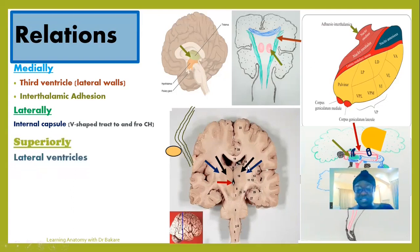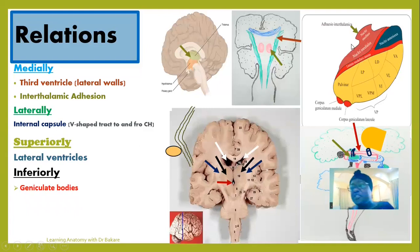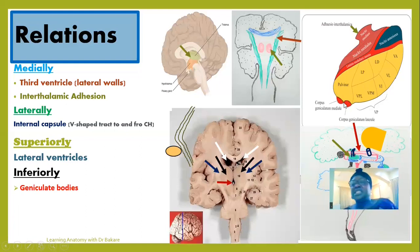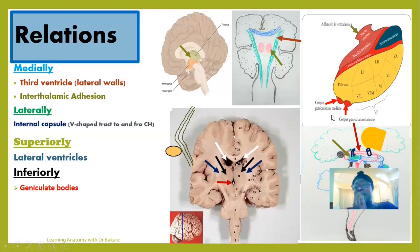Above the thalamus are the two lateral ventricles. Inferiorly, the structures seen are the geniculate bodies — the medial geniculate body and the lateral geniculate body. These are rounded bulges from the posterior inferior part of the thalamus, taken as part of the structures related inferiorly. These are described as the metathalamus. Also inferiorly is the hypothalamus, located in the anterior inferior part of the thalamus.